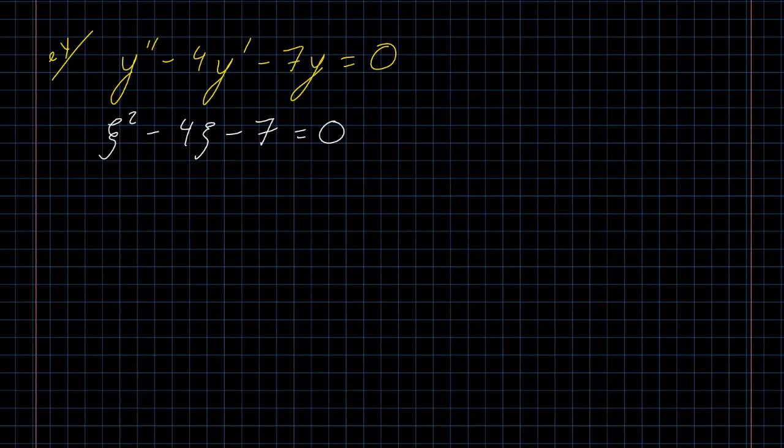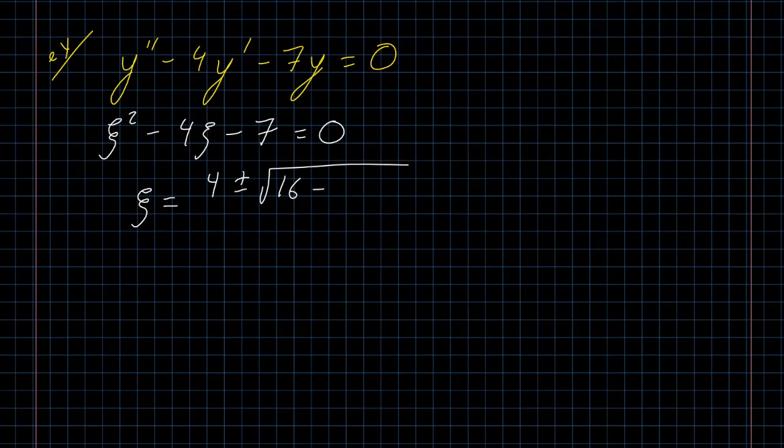All right. To factor this, I would need two numbers that multiply to negative 7 and add to negative 4, which I'm fairly confident are not integers and probably not fractions either. So in this case, I'm going to go to the quadratic formula. It's a little bit weird solving for ξ instead of x in the quadratic formula, but you've done enough quadratic equations in your life that hopefully it's not too bad. ξ or c in this case equals the opposite of b. Opposite of negative 4 is positive 4. Plus or minus the square root of b². Negative 4 squared is 16. Minus 4 times a, which is 1, times c, which is negative 7. 4 times negative 7 is negative 28. We have subtraction already, so let's just change that to addition and put in our 28. All over 2 times a, which is, well, still 1.